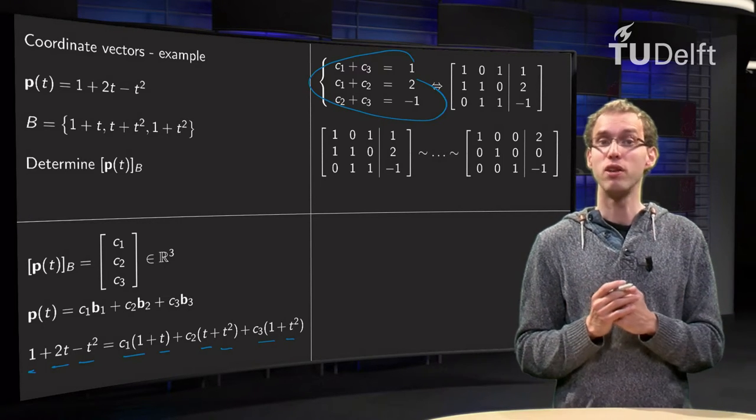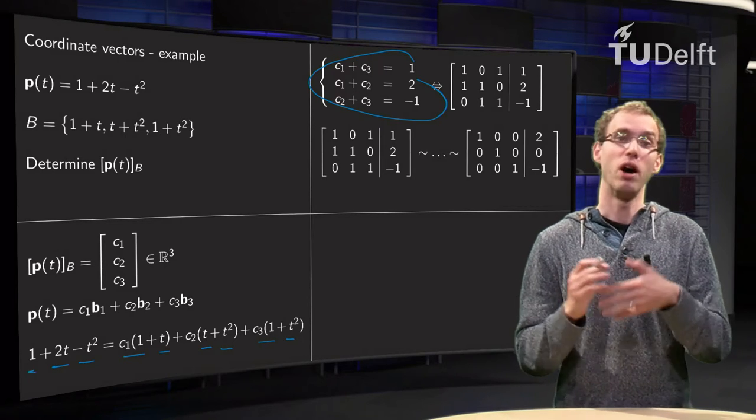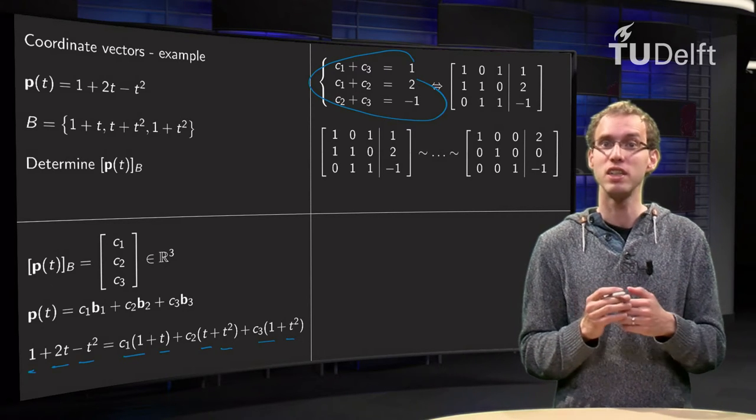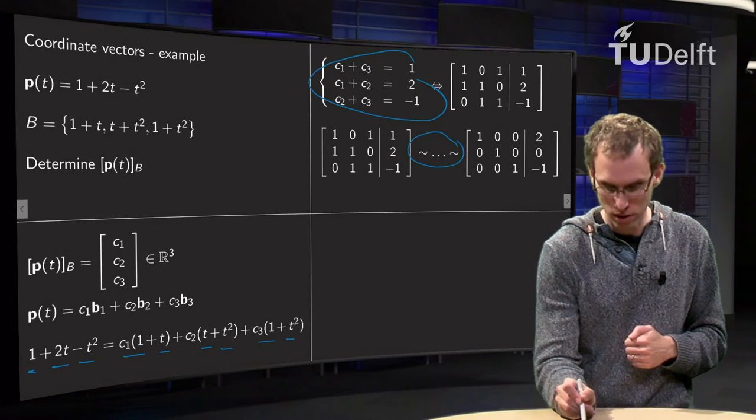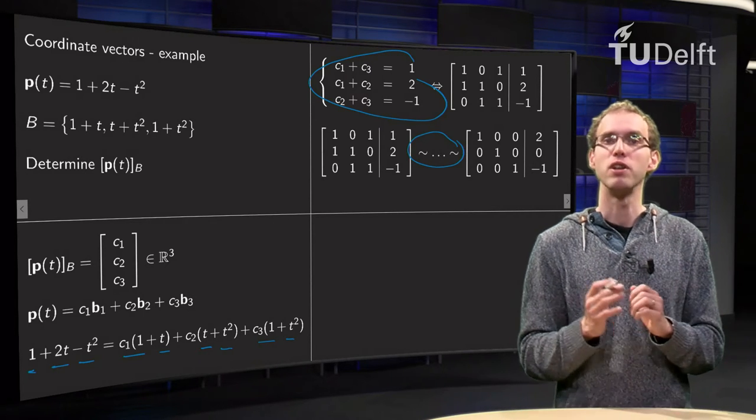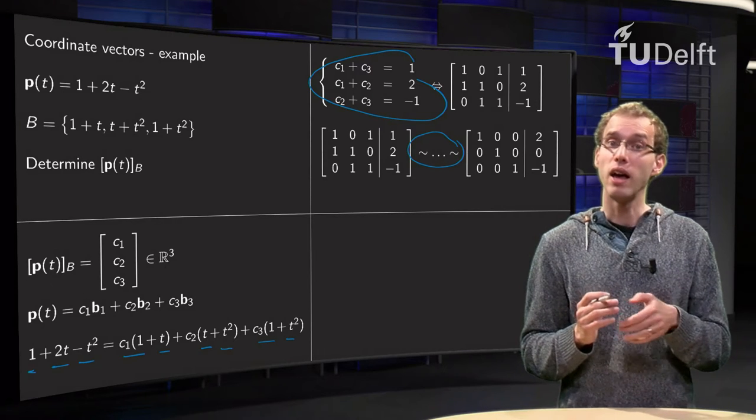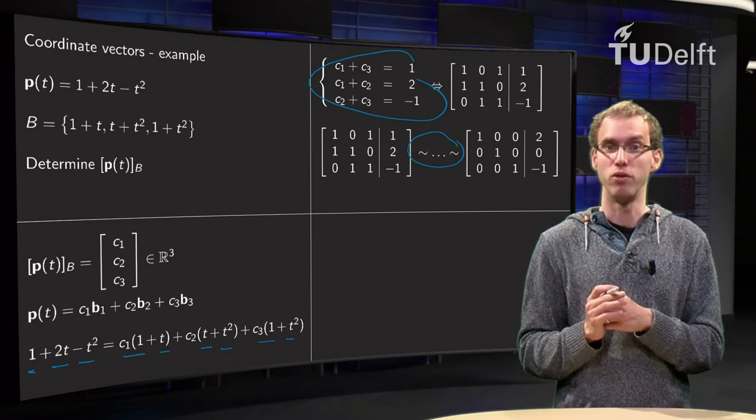So we see we have three equations, three unknowns. We know how to do this - we form an augmented matrix and do row reduction. Well, the row reduction steps are done over here. I skip that part, you know how to do that.